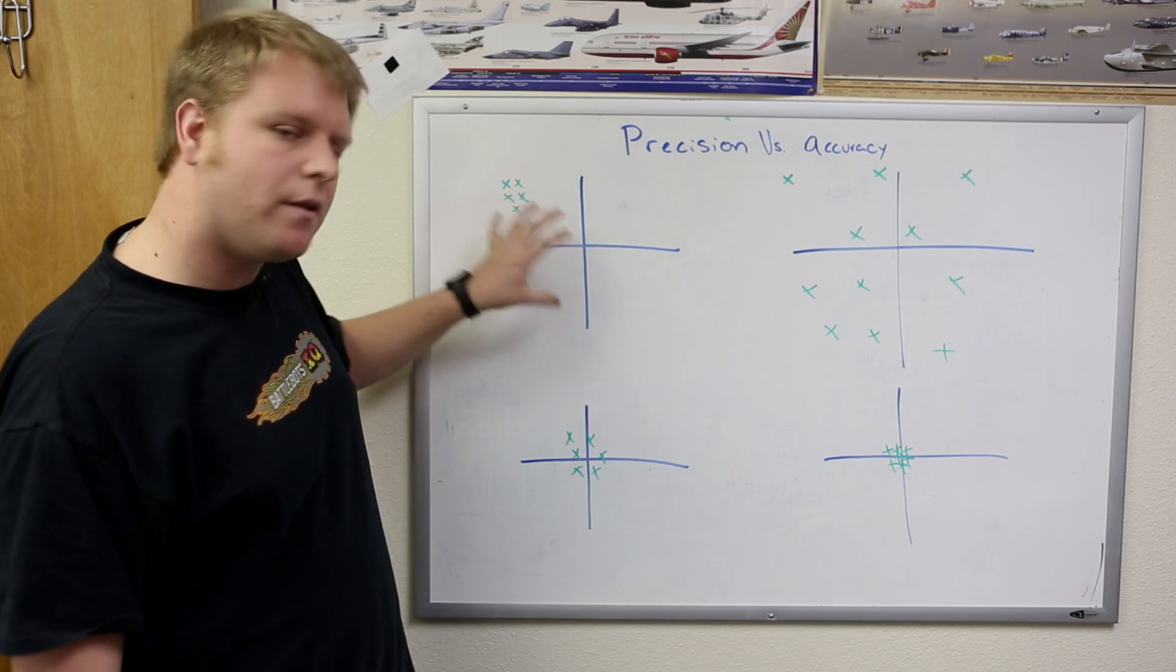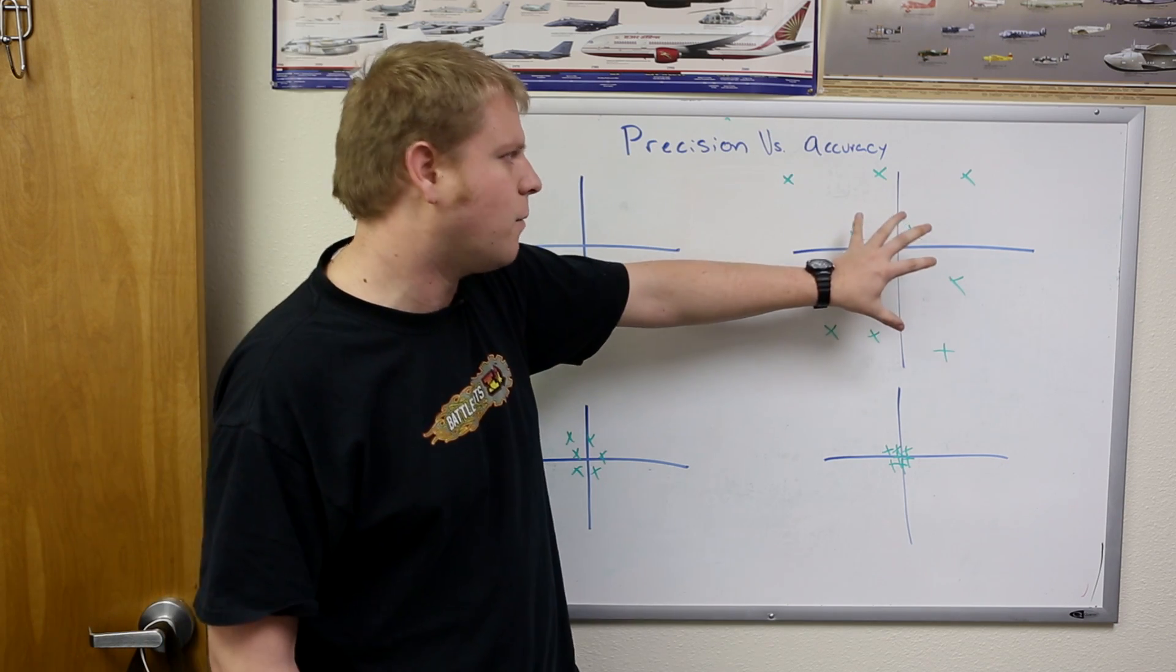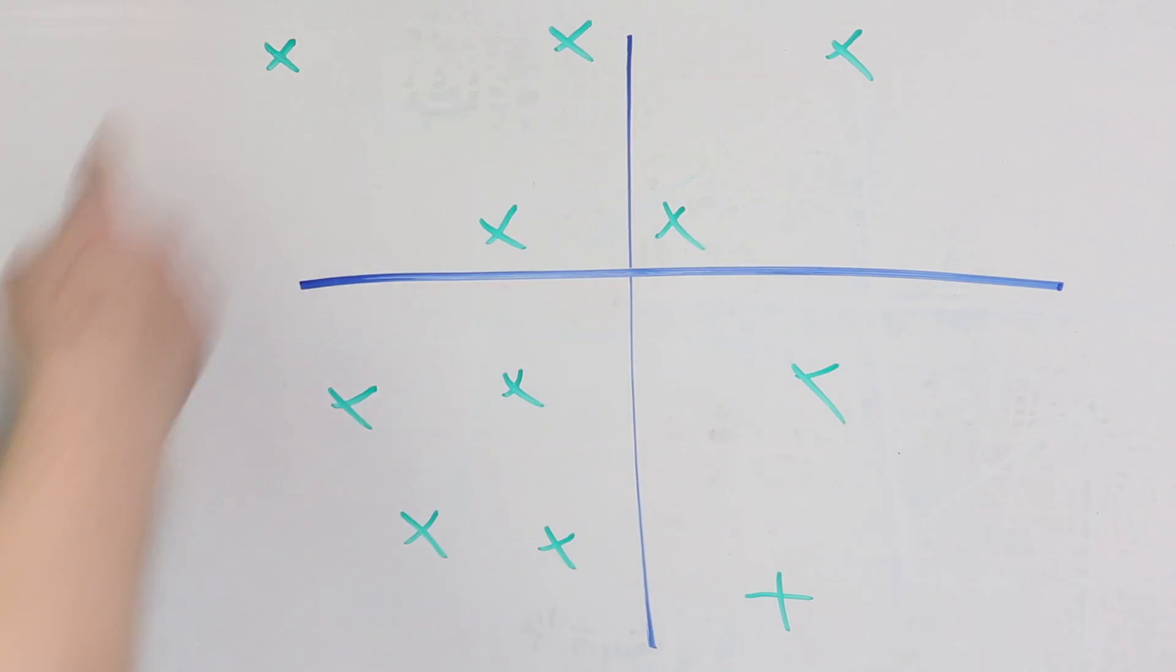Moving over to another type of system is one here where you have low accuracy, low precision.